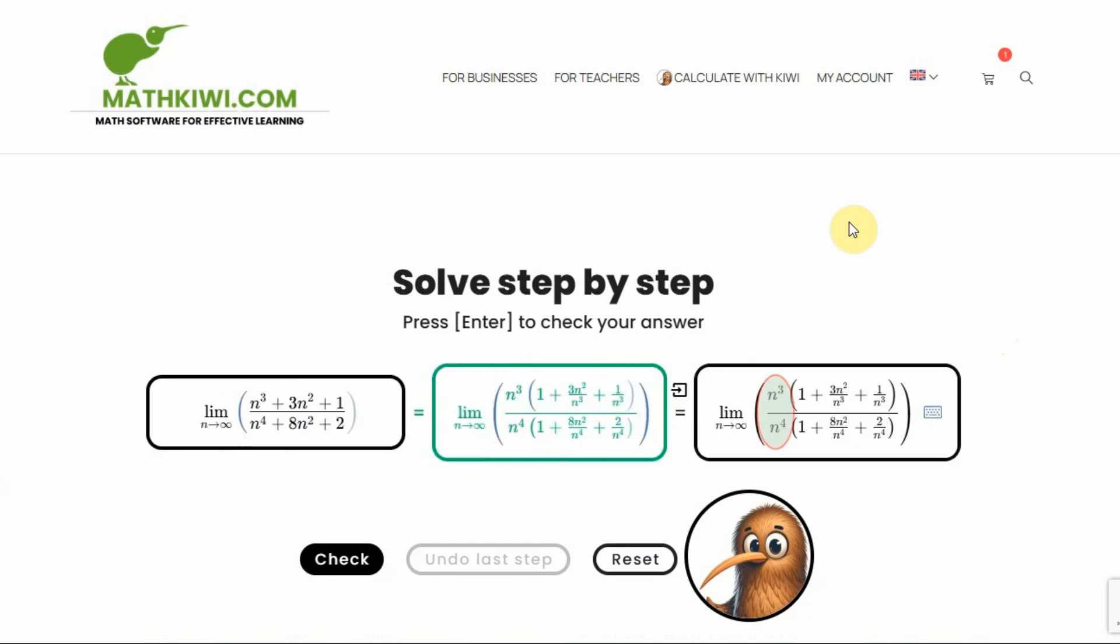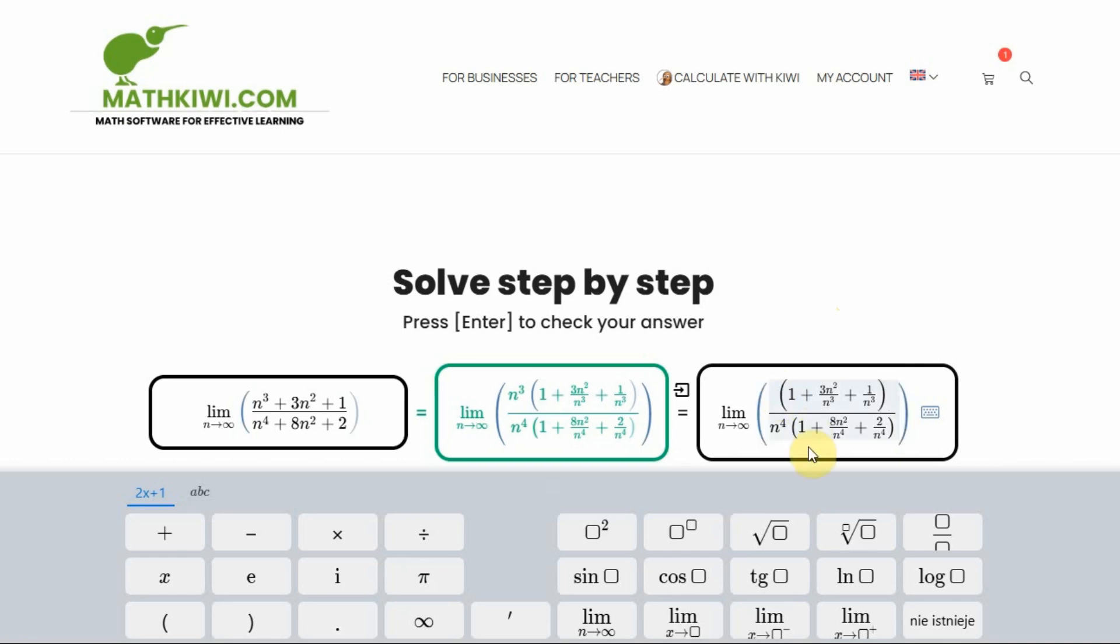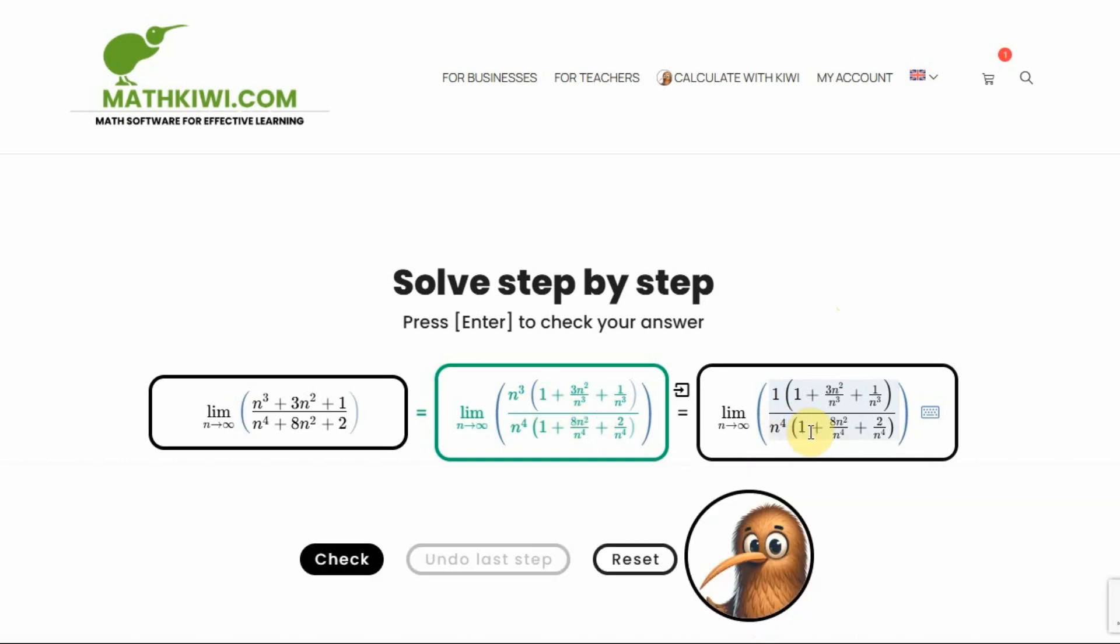Let's move on. N cubed and n to the fourth will cancel out. How? On the top, there will just be 1, right? Maybe I'll even write it down like this. And at the bottom, there will be... It's clear, this simplifying of powers is simple.